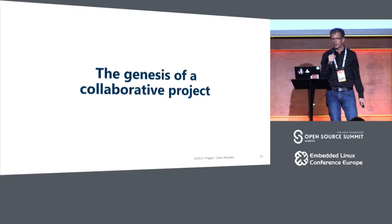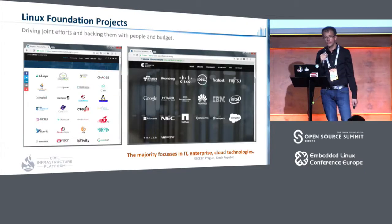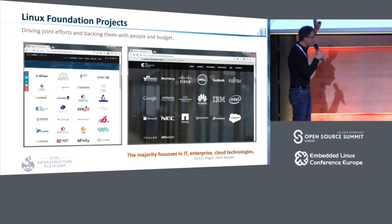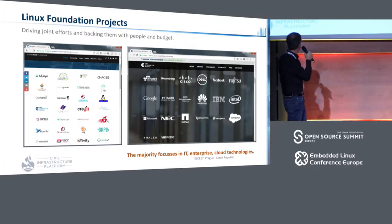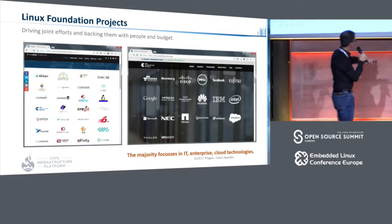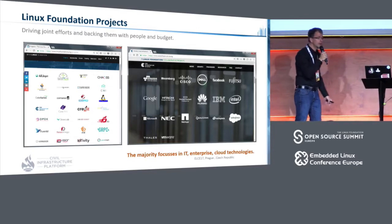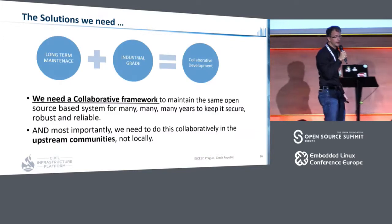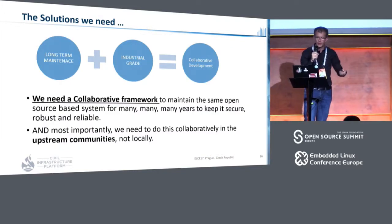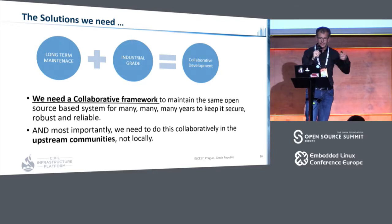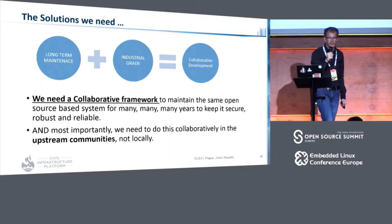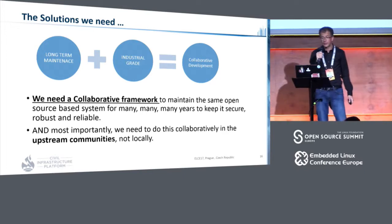We looked for a way to organize this. We talked to our competitors and all the people having the same problems. We agreed that nobody buys these systems because of a special Linux version — it's just a requirement that we ensure long-term maintenance. This is a perfect setup for a collaborative project, and we decided to do this under the umbrella of the Linux Foundation. Most other Linux Foundation projects focus on IT enterprise and cloud technologies. They have in common that a lot of companies back this in terms of people and money. This was the reason to say the old industry needs to collaborate in the same way, focusing on long-term maintenance, an industrial-grade Linux stack, and close cooperation with all other projects, with a strong focus on upstream work.